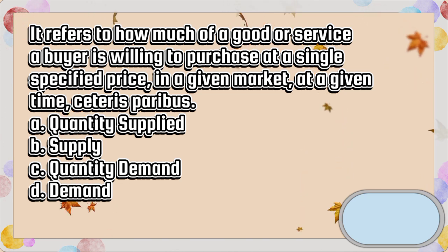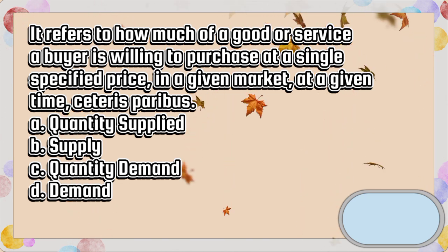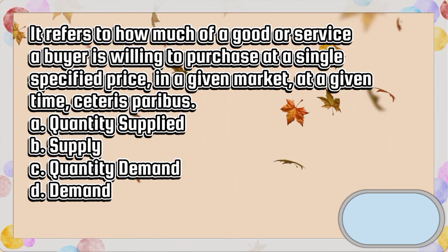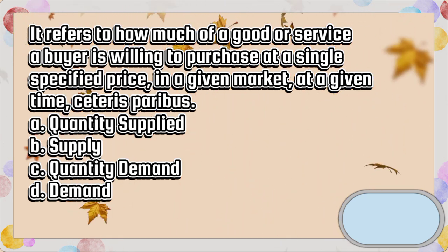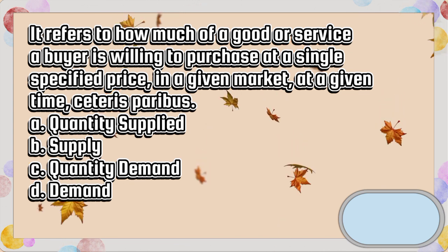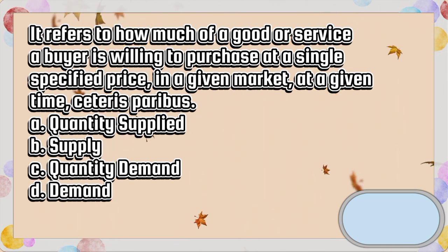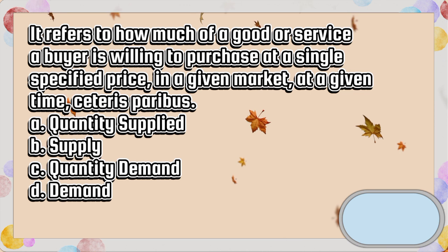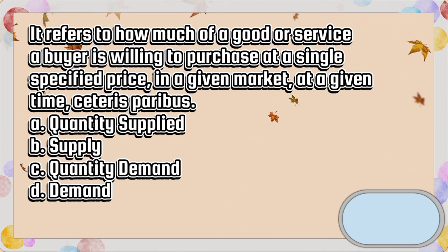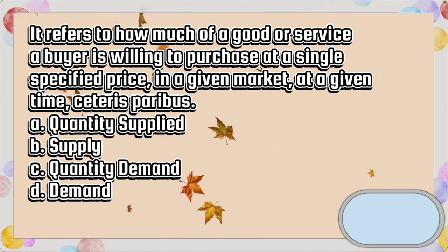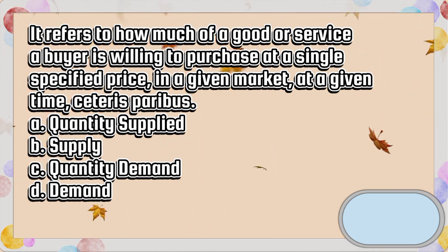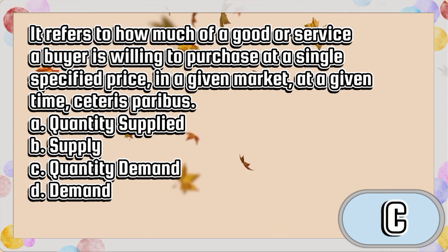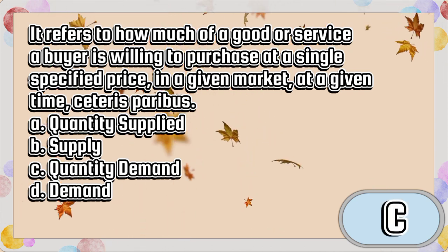It refers to how much of a good or service a buyer is willing to purchase at a single specified price in a given market at a given time, ceteris paribus: A. Quantity supplied, B. Supply, C. Quantity demand, D. Demand. The answer is letter C.